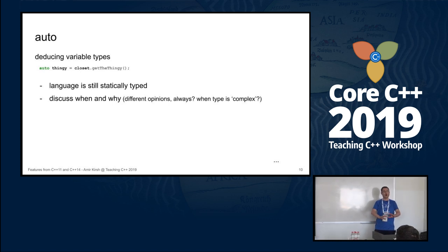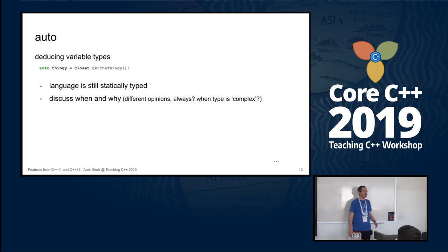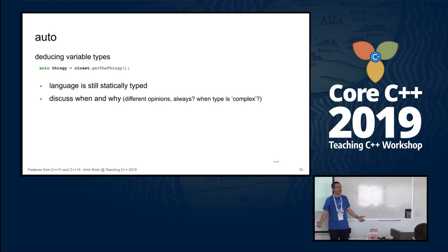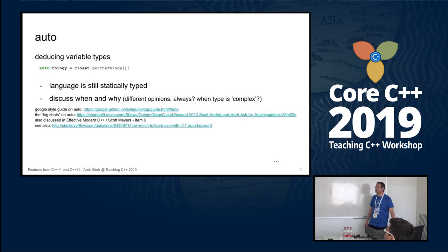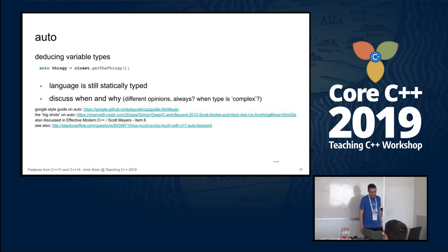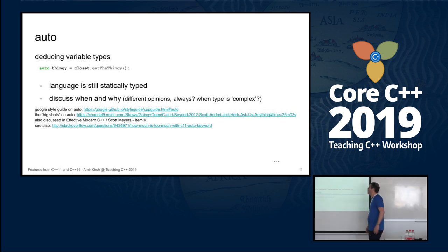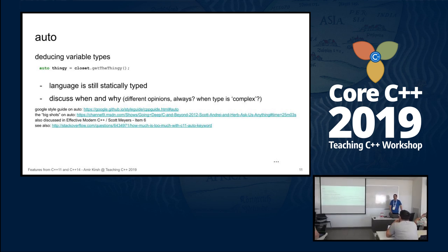There are different opinions on when to use `auto`. The big shots of C++ — Herb Sutter, Bjarne Stroustrup, Scott Meyers — say use it almost always. On the other hand, the Google Style Guide says don't use it too much. Students have their own opinions and I have mine. After all, `auto` can help us. I'm wearing an 'I love auto' shirt today — it's a geek conference, so we have geek shirts.